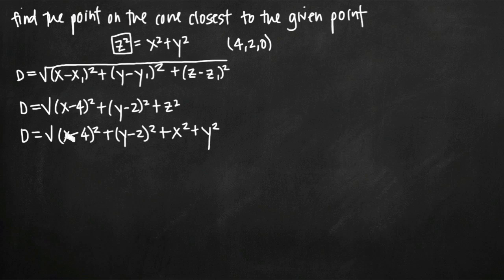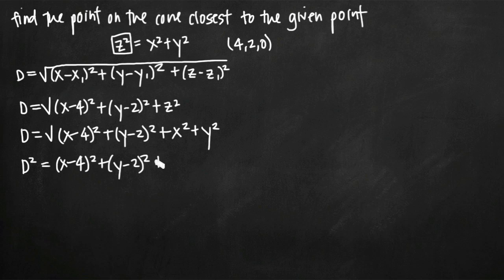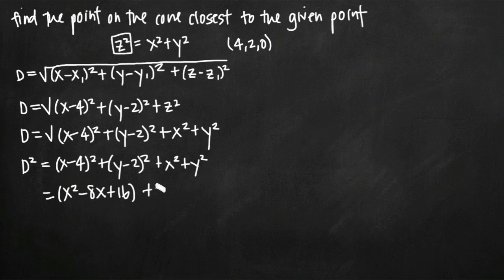This is the equation we want to optimize, but before taking partial derivatives let's simplify. We have a square root on the right-hand side — things would be simpler without it. We can square both sides without changing the equation, giving us d² = (x − 4)² + (y − 2)² + x² + y². We expand: (x − 4)² = x² − 8x + 16, and (y − 2)² = y² − 4y + 4.